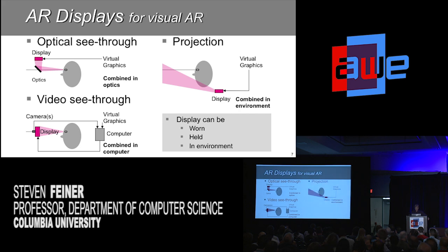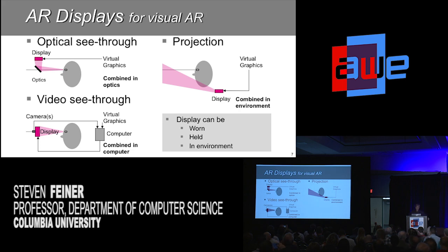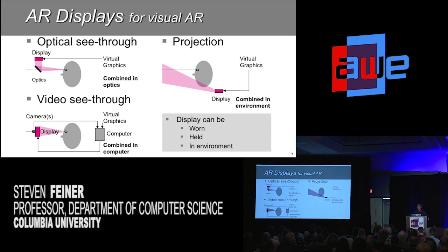Finally, we have projection, in which instead of combining in optics or in the computer, we literally combine in the world by projecting with a projector — spraying pixels into the world. If we spray them in the right place and the right color, we can make things look like they're there that really aren't. A simple example would be taking an otherwise white screen and turning it into a display by projecting right on top of it, though that's not really interesting enough to normally be called AR.